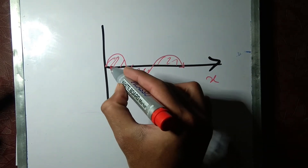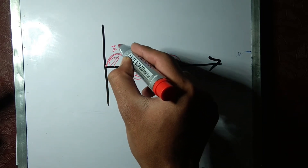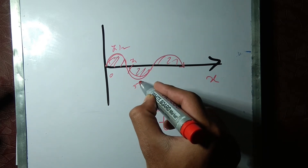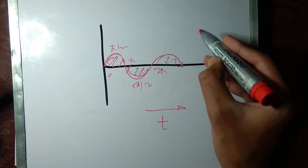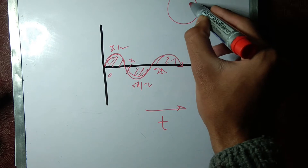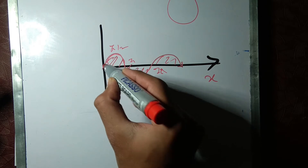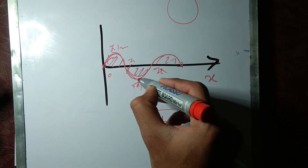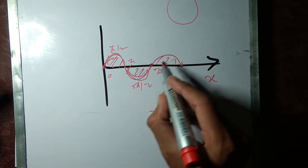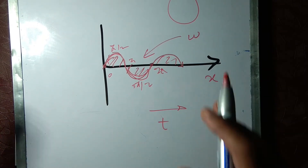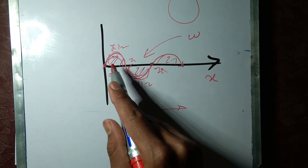This is half of the cycle, and this is the other half: 0, pi/2, pi, 3pi/2, and 2pi. The frequency is the reciprocal of the time period for one complete cycle — this is the frequency of the electric field, which we call omega. Omega is the oscillating frequency with which this wave is oscillating.